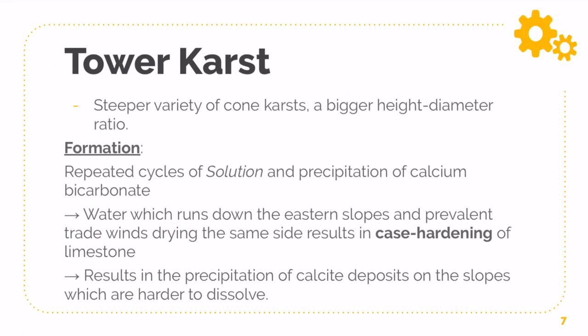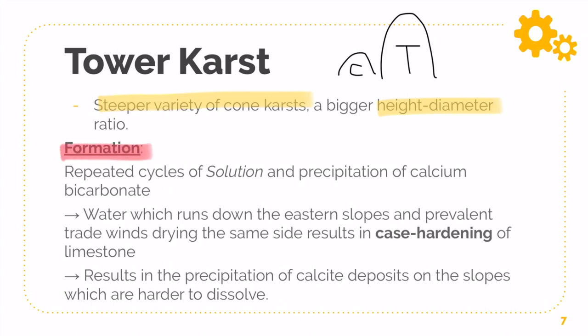Next comes Tower Cast. Tower Cast is slightly more tricky, but essentially it's just a steeper variety of Cone Cast. It is basically bigger in terms of height and diameter — your height-to-diameter ratio is going to be larger. If I were to draw it out: this could be a Cone Cast, whereas Tower Cast would be something much taller and wider — extremely big. To understand how it forms, you need to bring your concepts on chemical weathering into play.